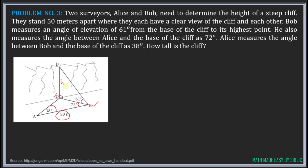To get the height of the cliff, we first need the distance from Bob to the base of the cliff. We can use the Law of Sines on the triangle formed by Alice, Bob, and the base. We find the third angle C₁ = 180 − (38 + 72) = 180 − 110 = 70 degrees.